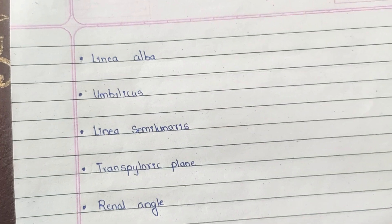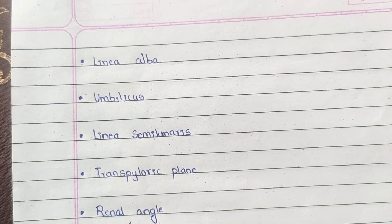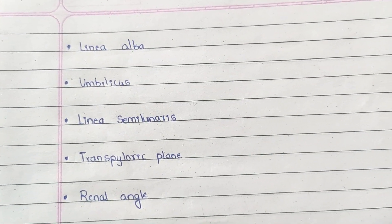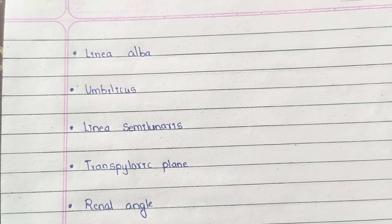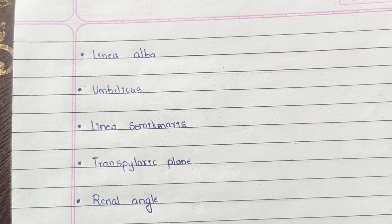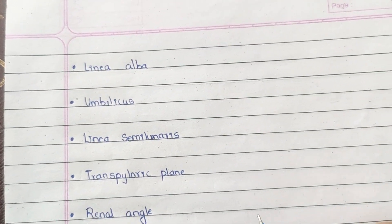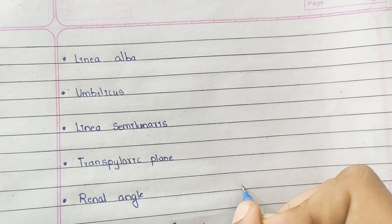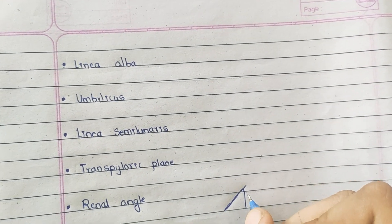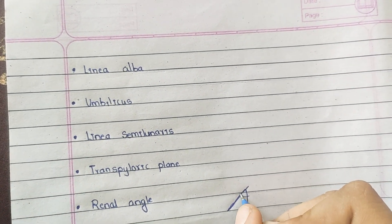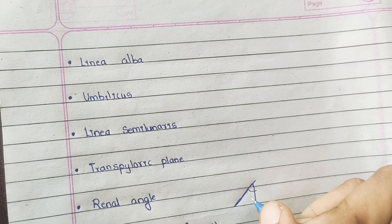The renal angle is present on the posterior part and is the angle formed between the outer border of the erector spinae muscle and the twelfth rib. Here lies the lower part of the kidney.